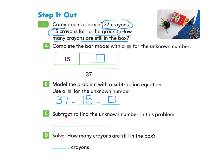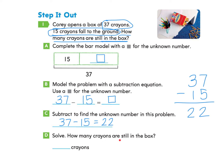Now for Part C, subtract to find the unknown number. I'll write the problem vertically: 37 take away 15. You may want to pause to try this on your own. In the ones column, 7 take away 5 equals 2. In the tens column, 3 tens take away 1 ten equals 2 tens. So 37 take away 15 equals 22. There are 22 crayons still in the box.